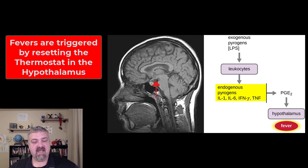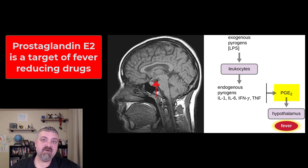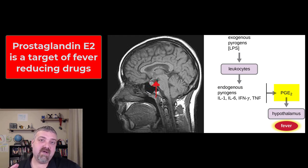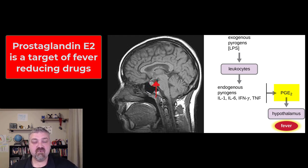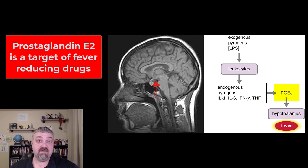They're going to head to the hypothalamus and lead to the production of prostaglandin E2, and that's what's going to turn up the thermostat in the hypothalamus. Whenever you hear the word prostaglandin, you should pay attention, because this is where your non-steroidal anti-inflammatory drugs come in — their primary function is to control prostaglandins, because prostaglandins lead to pain, inflammation, and fever. This is why drugs like ibuprofen can control fevers.